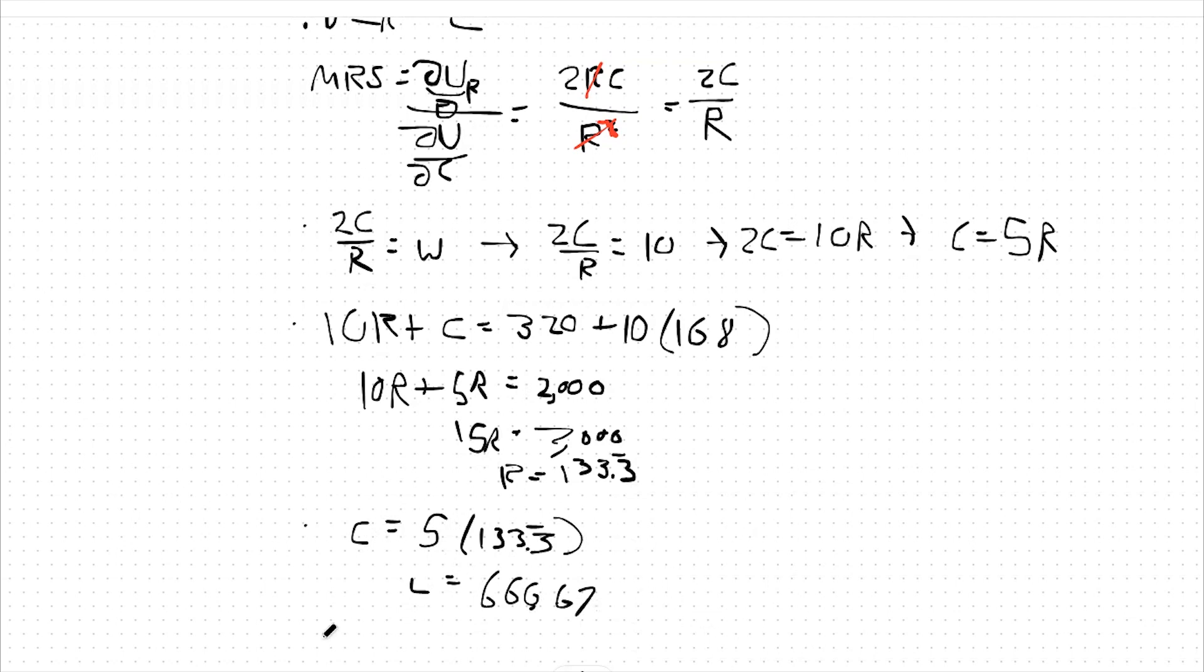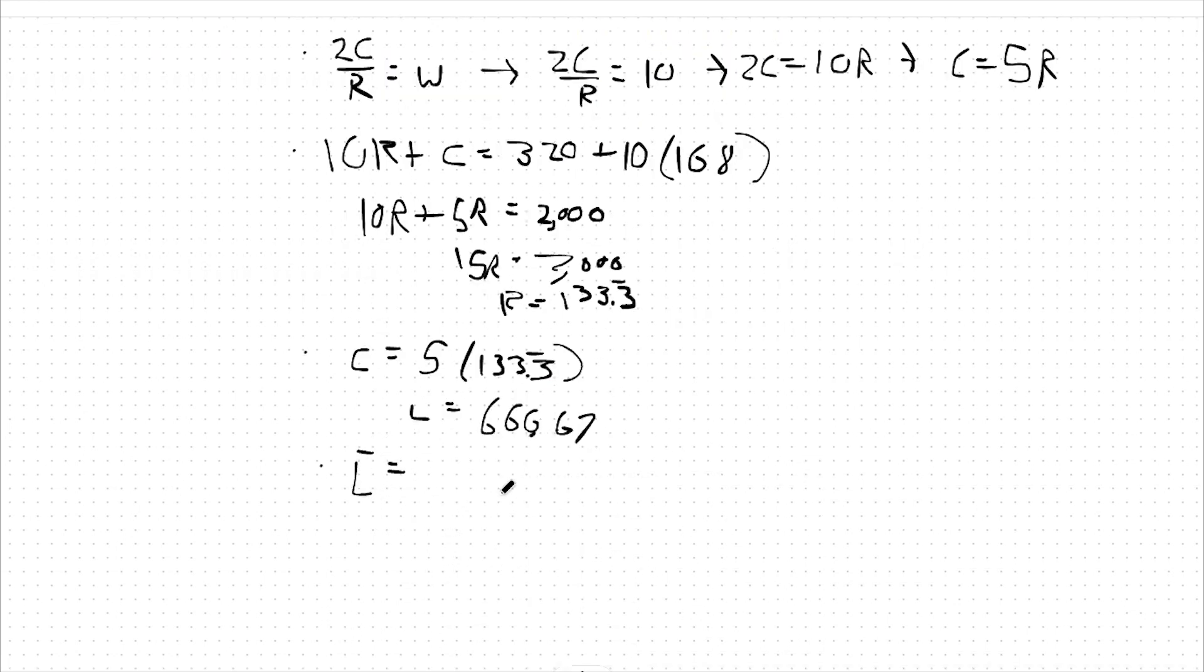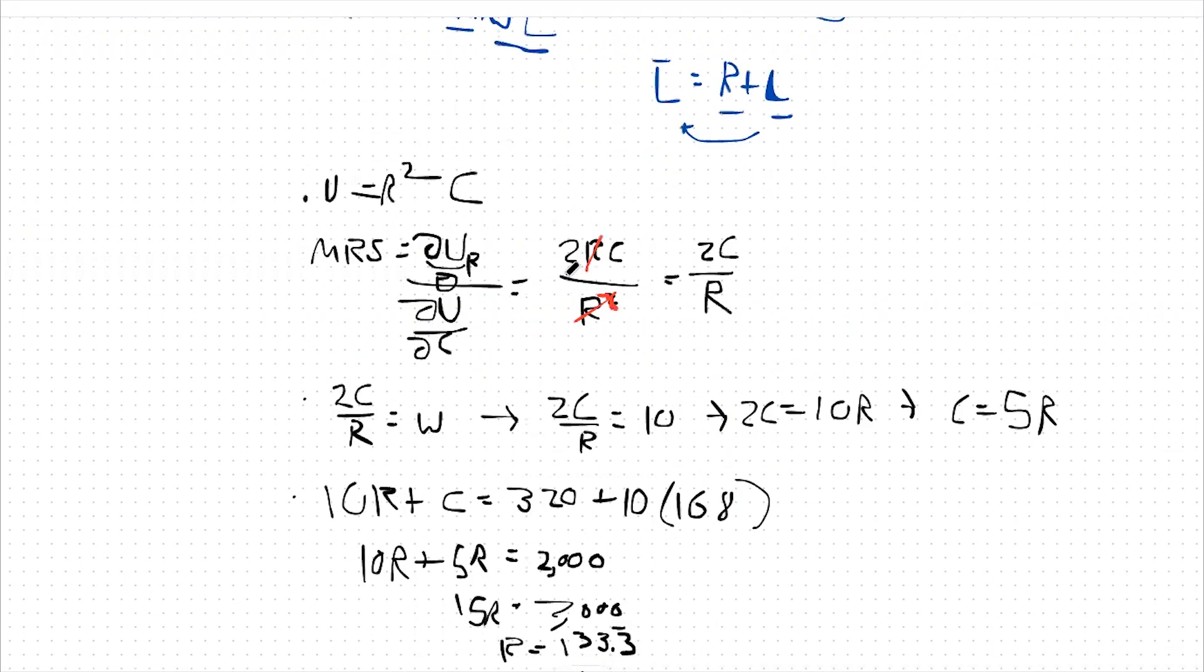And then finally our optimal amount of labor is going to be L bar equals R plus L. 168 equals 133.3 repeating plus L. So 168 minus 133.33 is 34.67 for optimal amount of labor. And that's it.